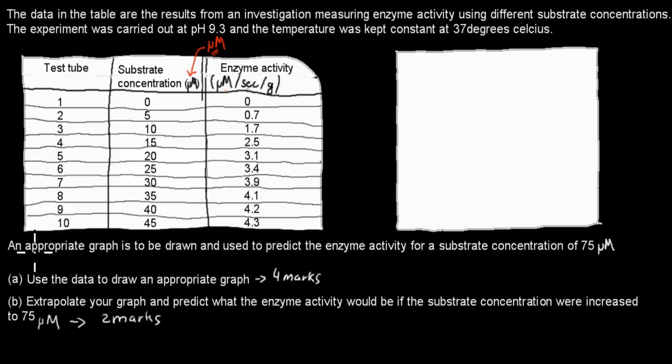An appropriate graph is to be drawn and used to predict the enzyme activity for a substrate concentration of 75 micromolar. Part A: Use the data to draw an appropriate graph - that's for 4 marks. Part B: Extrapolate your graph and predict what the enzyme activity would be if the substrate concentration were increased to 75 micromolar - that's 2 marks. Pause the video when you're ready and attempt the question.